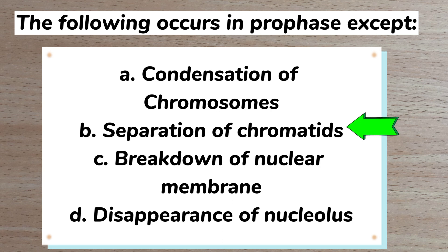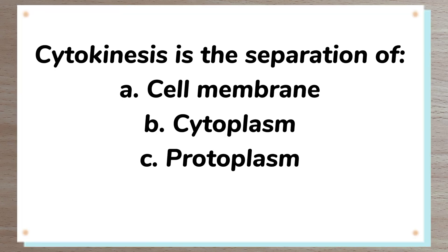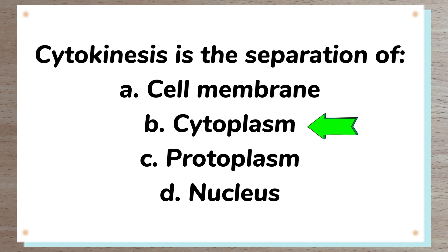Number 12. Cytokinesis is a separation of: A cell membrane, B cytoplasm, C protoplasm, D nucleus. Answer: B cytoplasm.